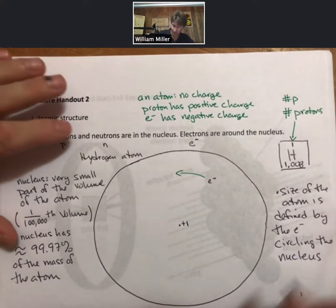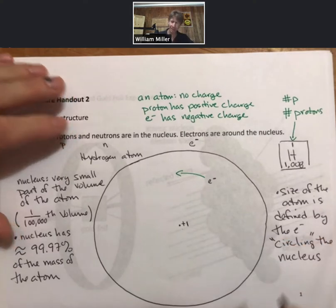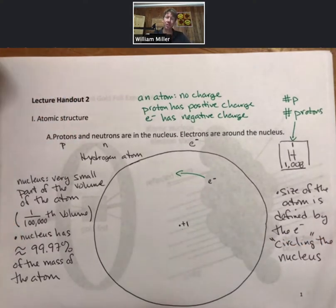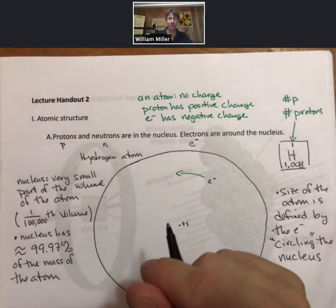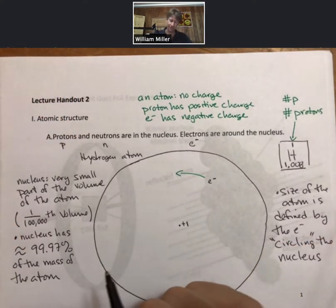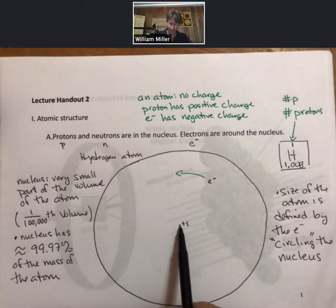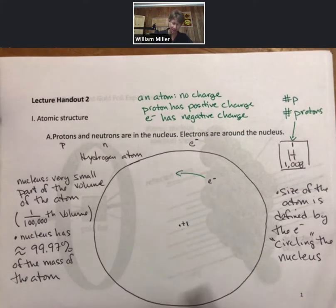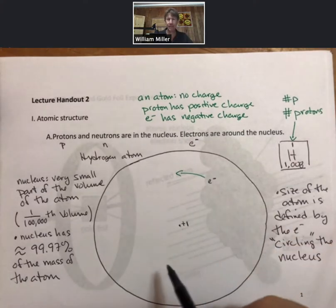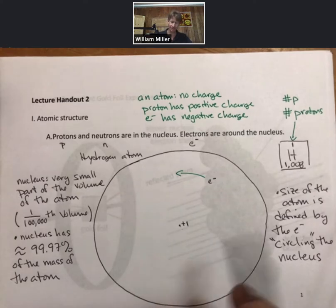I'm going to put 'circling' in quotes, because it's not always a circle or a sphere — as we'll see, sometimes it is though. So that's our picture of an atom: a very tiny nucleus with most of the mass, and electrons going around it defining the size of the atom.